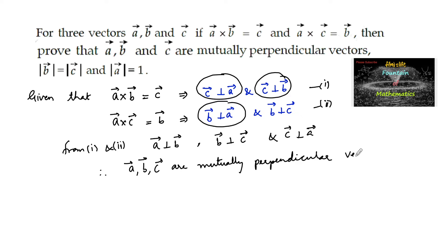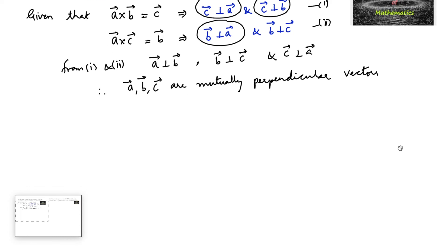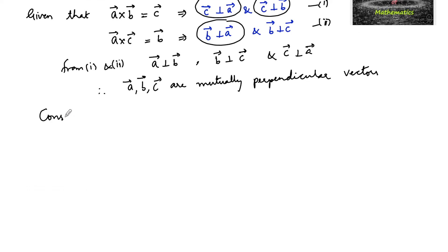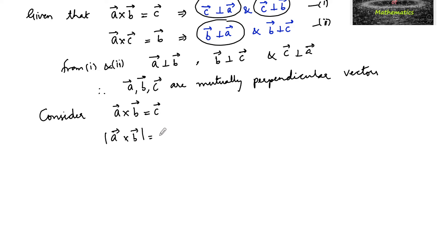Therefore, a, b, c — these three vectors are mutually perpendicular vectors. Now we need to prove that mod b is equal to mod c and mod a is equal to 1. Consider a cross b is equal to c; applying mod on both sides, mod of a cross b is equal to mod c.